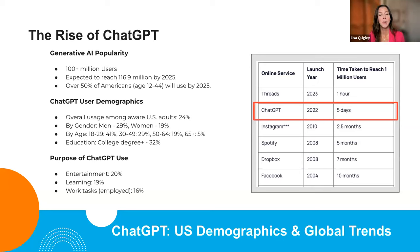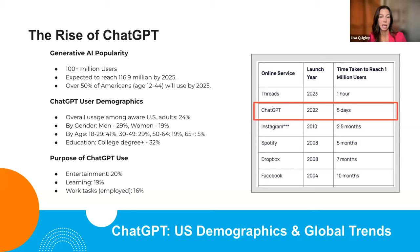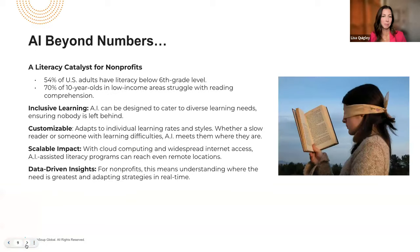As for who's using ChatGPT, it's really all-encompassing. The younger demographic, 18 to 29, makes up 40% of users, but it's heartening to see even the 65-plus demographic on there at 5%, showing it has wide appeal. About 32% of users have a college degree or higher. Many use it for entertainment — about 20% — about 19% for education, and about 16% to help them professionally, which is why we're all here.